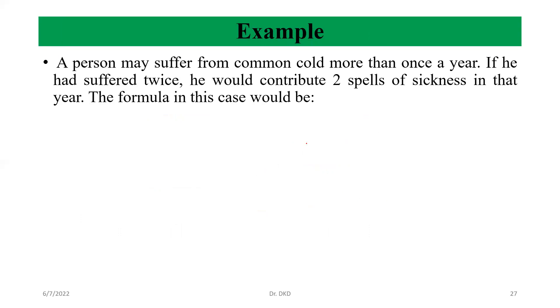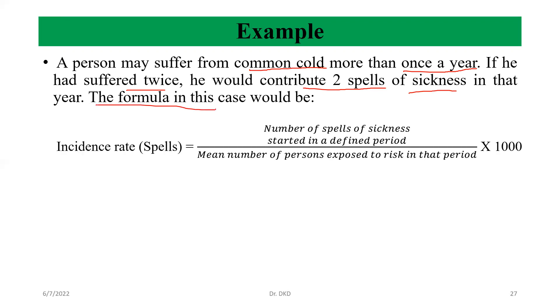A person may suffer from common cold more than once a year. If he had suffered twice, he would contribute two spells of sickness in that year. The formula in this case would be incidence rate for spells: the number of spells of sickness started in a defined period divided by mean number of persons exposed to risk in that period, multiplied by 1000.